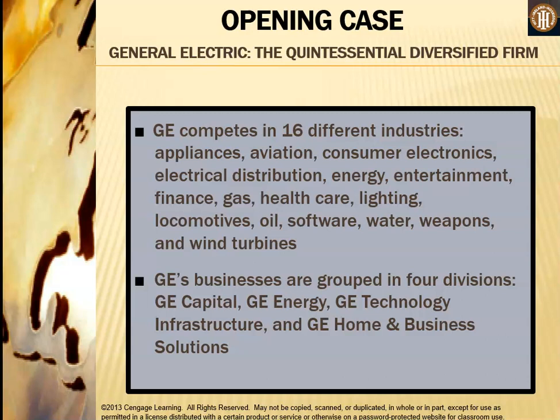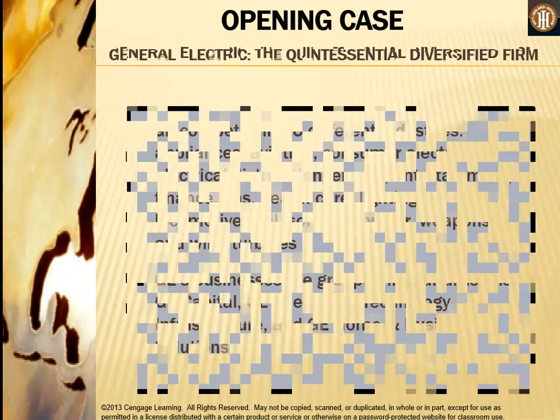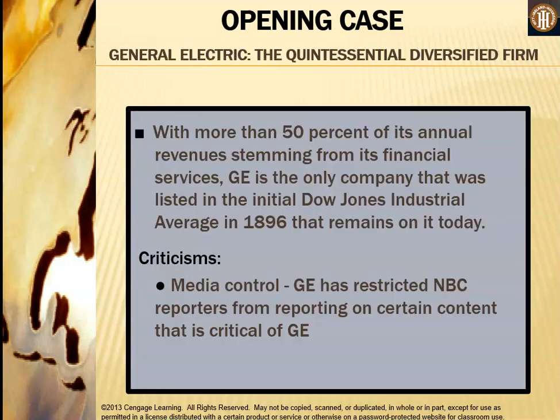GE's businesses are grouped in four divisions: GE Capital, GE Energy, GE Technology Infrastructure, and GE Home and Business Solutions. With more than 50% of its annual revenues stemming from its financial services, GE is the only company listed in the initial Dow Jones Industrial Average in 1896 that remains on it today — basically the stock market.